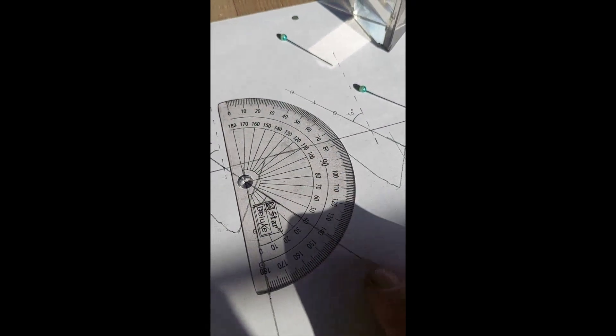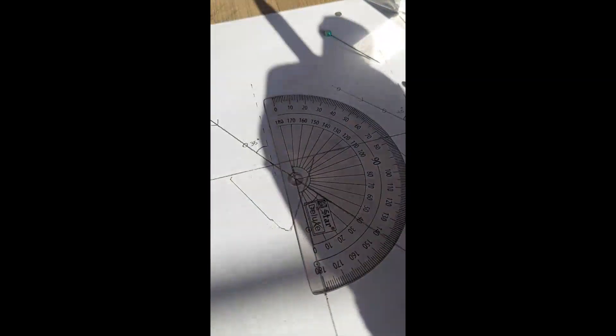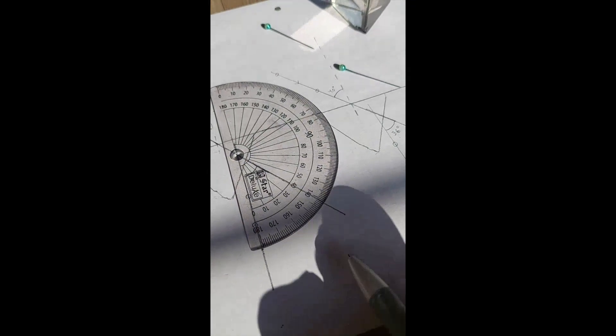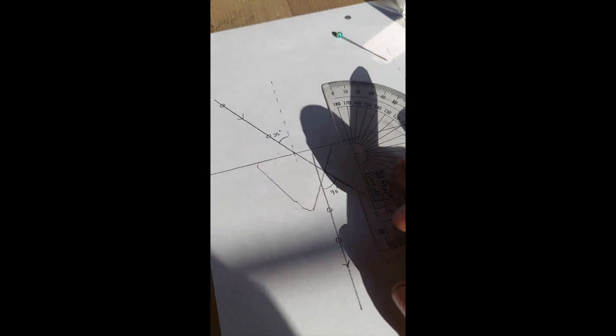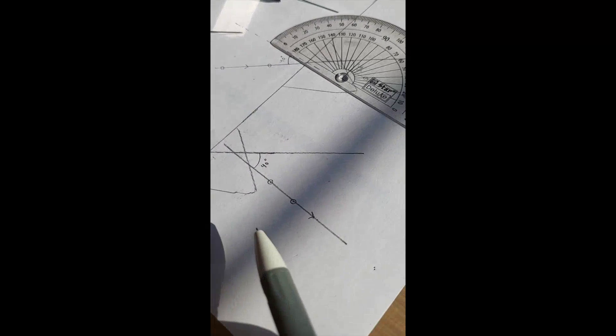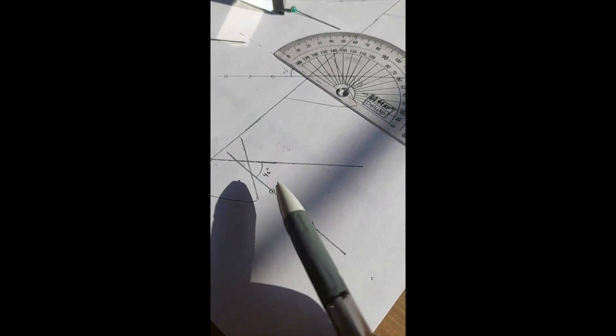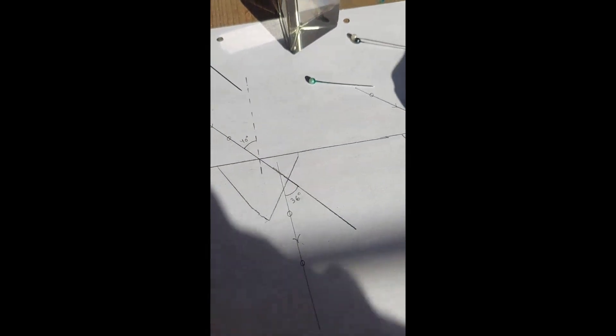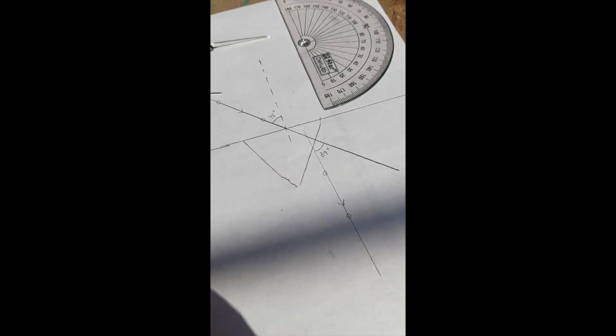This is the angle between these two rays, the incident and the refracted ray. So this angle is 40 degrees. We repeat the same procedure for angle of incidence as 40, 45.